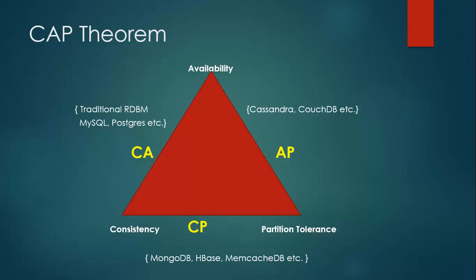The third one is CP — consistency and partition tolerance. If you require consistency and partition tolerance, then MongoDB, HBase, memcacheDB, etc. provide both consistency and partition tolerance. It's up to you which database solutions you want to use based on many other factors. I am not saying these are the only solutions — these are just examples. There are many other solutions available in the market. Thanks a lot for listening. You can comment on the video and ask me if there are any doubts. Thanks once again.